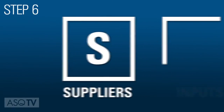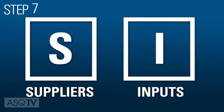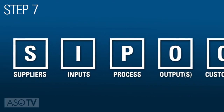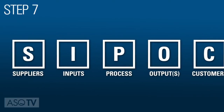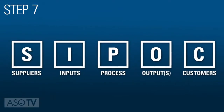Next, note the inputs — what is needed to execute and deliver the outputs. Then, list the five to seven highest level steps in the process as they exist today.